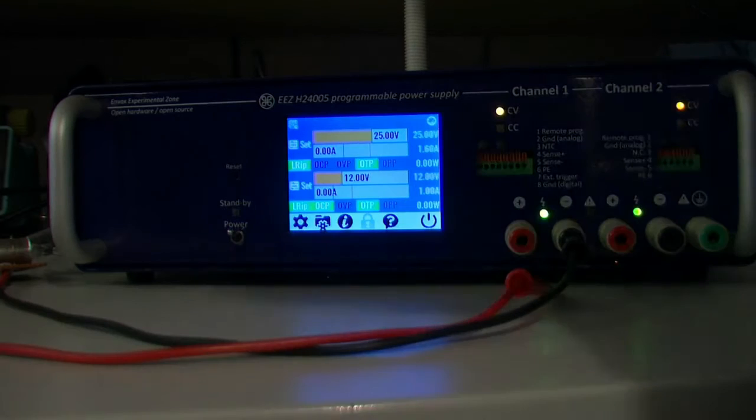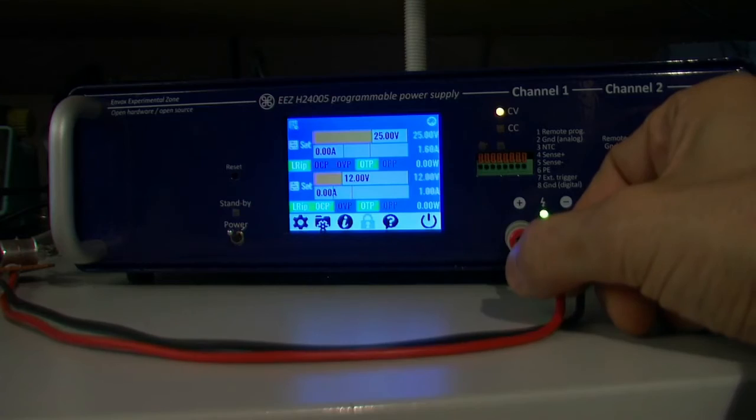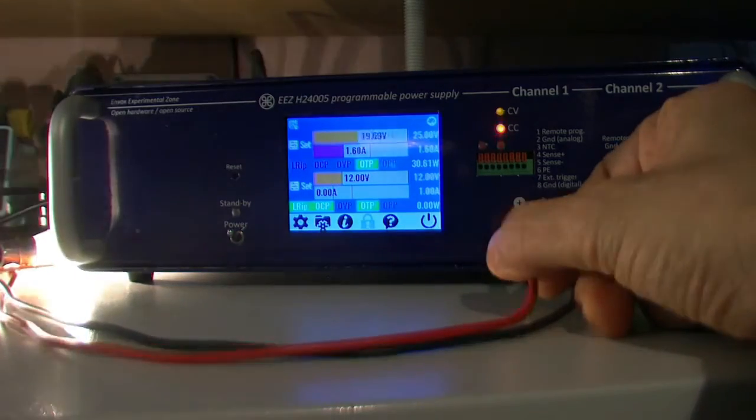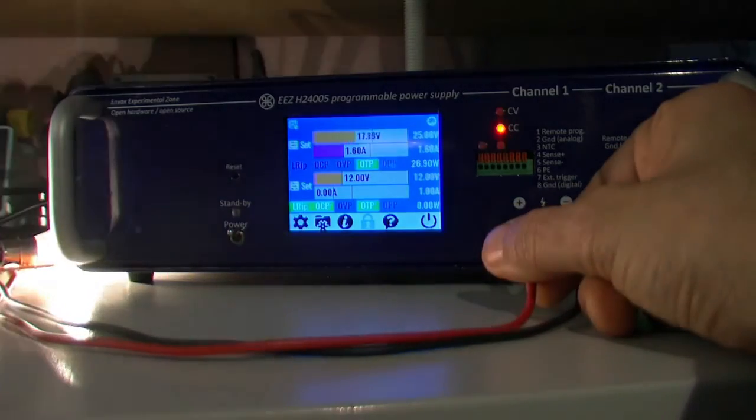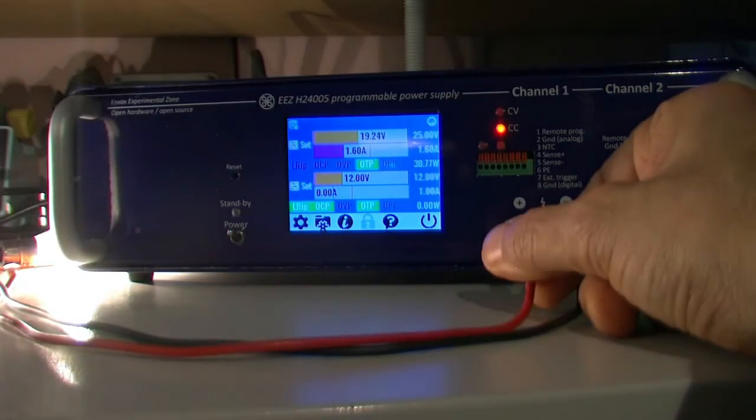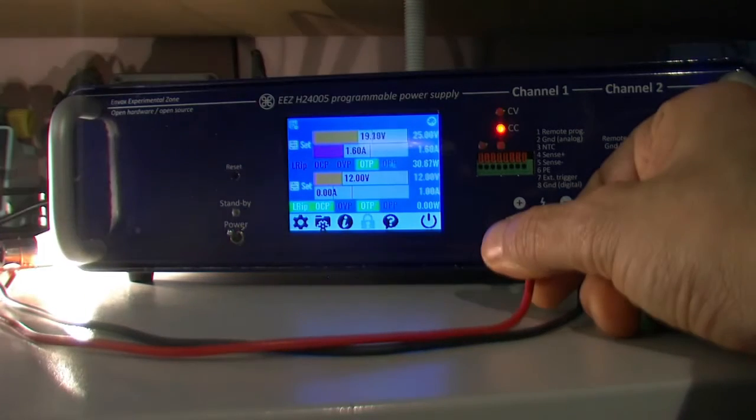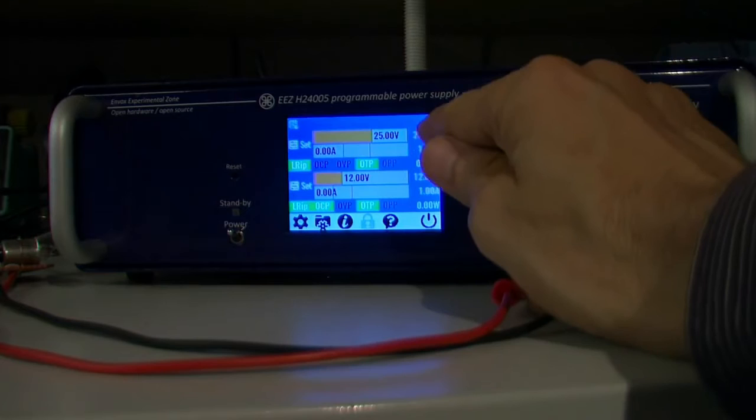When we connect a load like a lamp it looks like this, so you can see how voltage and current came to those values.